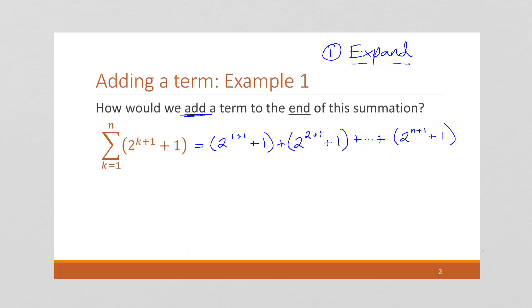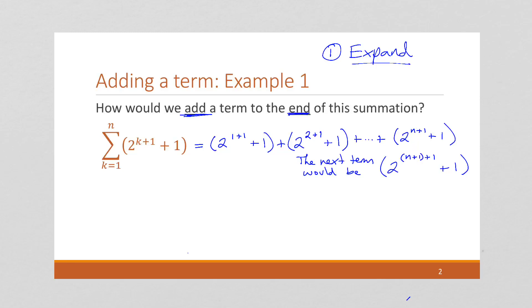We want to add a term to the end of this summation — meaning what would be the next term in this sequence? We stopped at n; n is just some number. Maybe it's 35, so we're going from 1 to 35. The next number in the sequence would be index 36. So, we replace n with n+1: 2^((n+1)+1) + 1. We're replacing n with n+1, making it the next index.